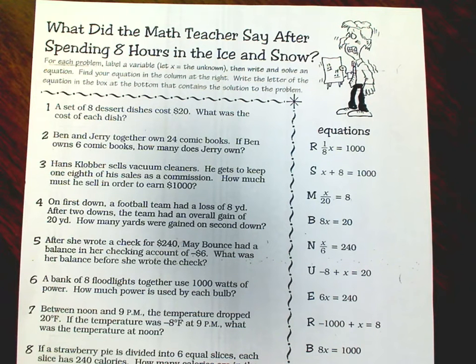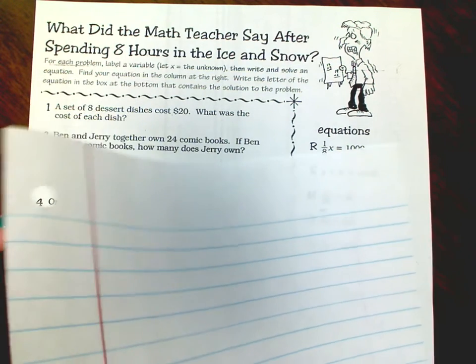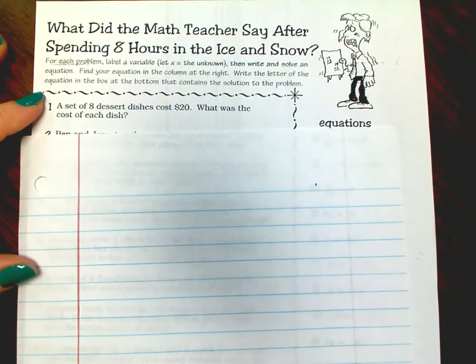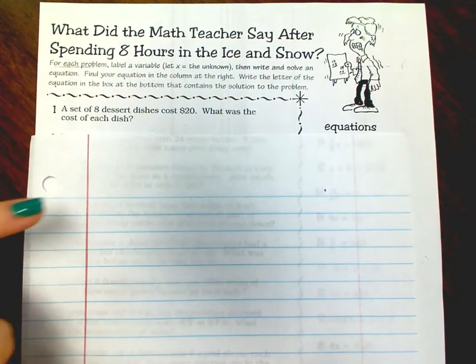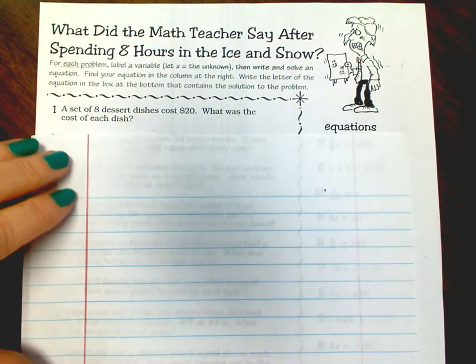Okay, what did the math teacher say after spending eight hours in the ice and snow? I'm gonna help you with this side. Number one: a set of eight dessert dishes cost twenty dollars, what was the cost of each dish?